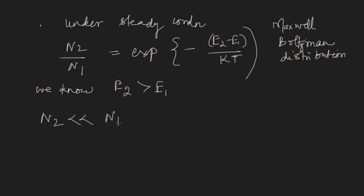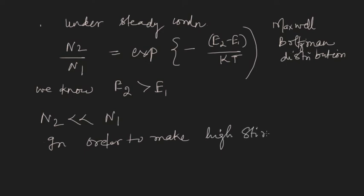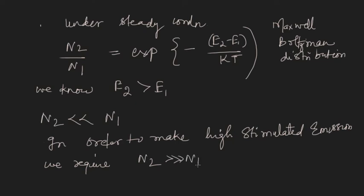From this equation it is very easy to see that under steady state, N2 is always less than N1, because all atoms tend to come to the stable ground state. Now, in order to have high stimulated emission we need N2 to be higher, but in steady state N1 is always more than N2. For high stimulated emission, we require N2 to be greater than N1.